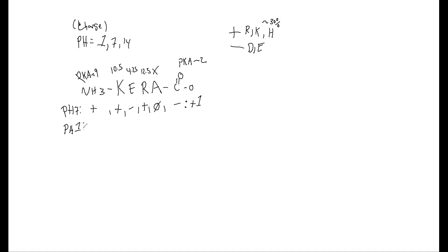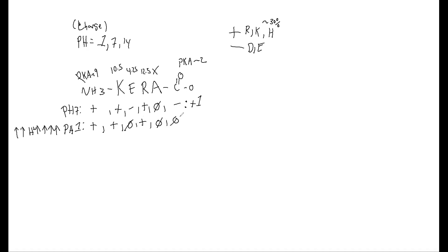At pH 1, you have a lot of protons in solution. Anything that was negatively charged at pH 7 becomes neutral because it gets a proton added. Anything neutral or positively charged stays that way. So N-terminus stays positive, lysine stays positive, glutamic acid goes from negative to neutral, arginine stays positive, alanine stays neutral, and the C-terminus goes from negative to neutral. Our peptide has a plus three charge at pH 1.